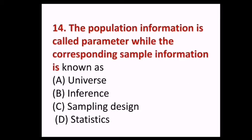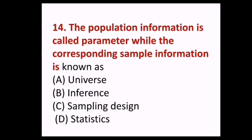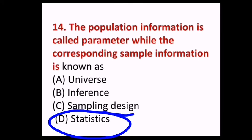Next question: The population information is called a parameter, while the corresponding sample information is known as — (A) universe, (B) inference, (C) sampling design, (D) statistics. Answer D, statistics.